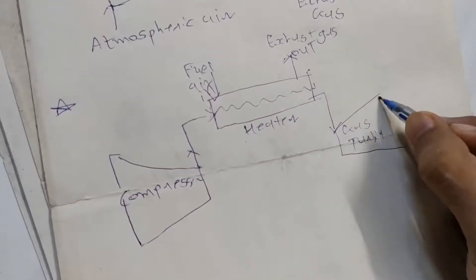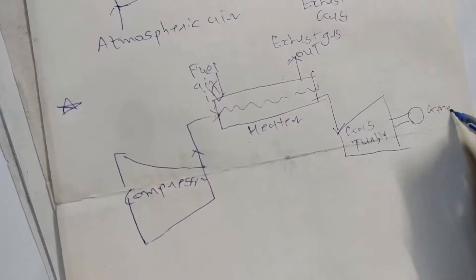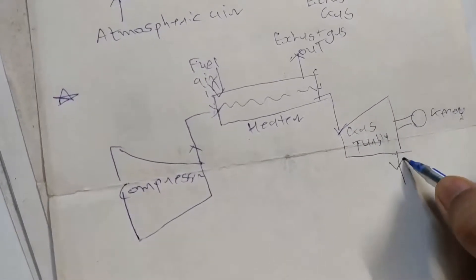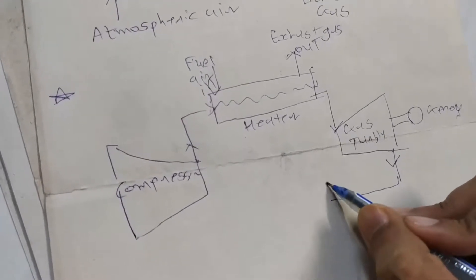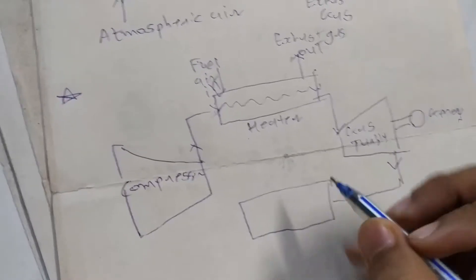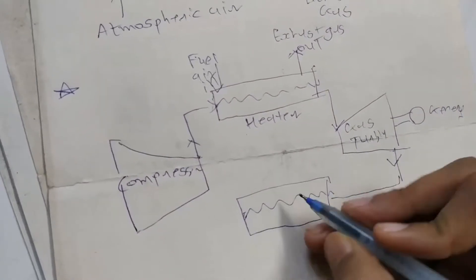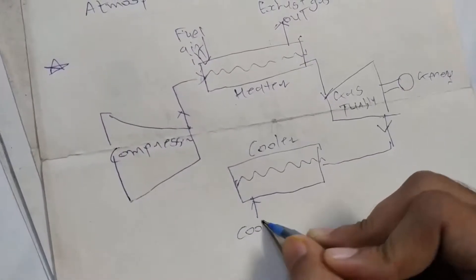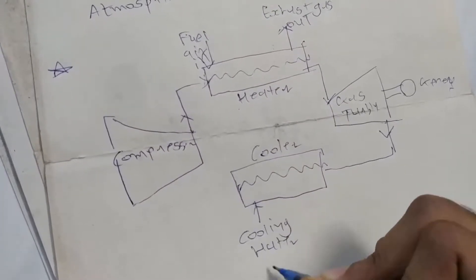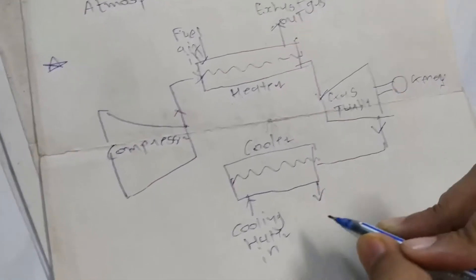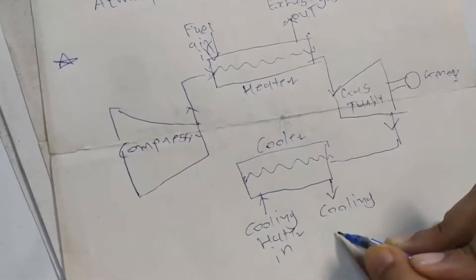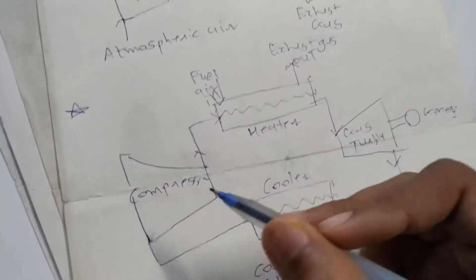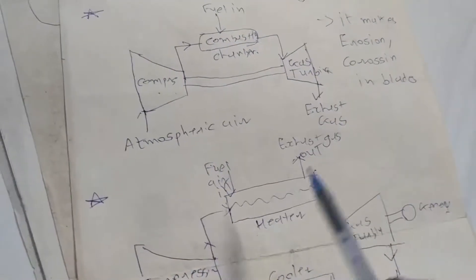This is our generator. Whatever we want to use, we don't let the working fluid go out into the atmosphere — we use it again in the closed cycle. I am just drawing the figure so it becomes easy for me to explain everything. This is the cooler type heat exchanger, and this air goes back to the compressor again.